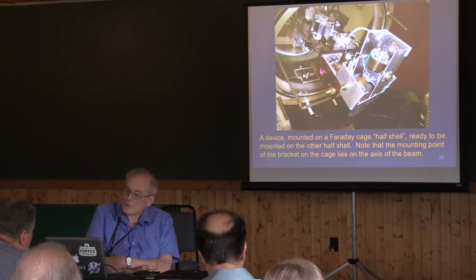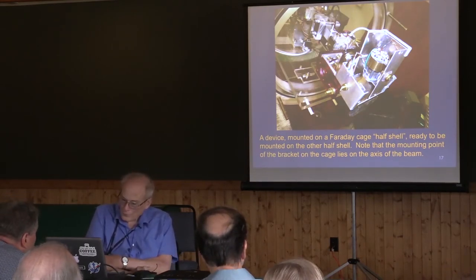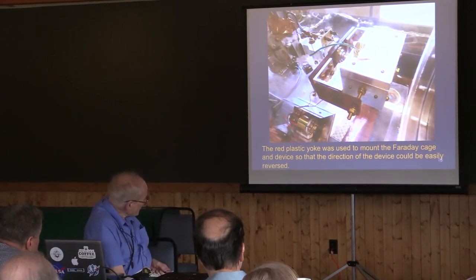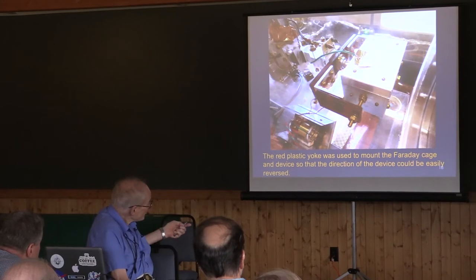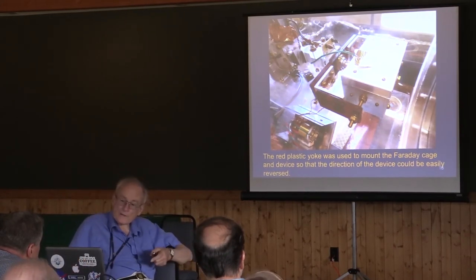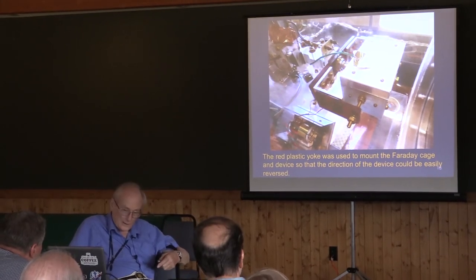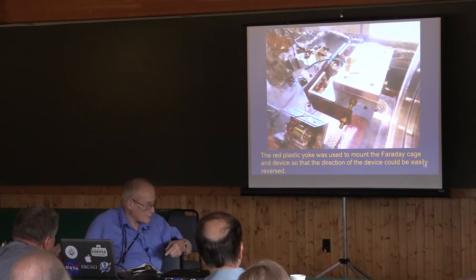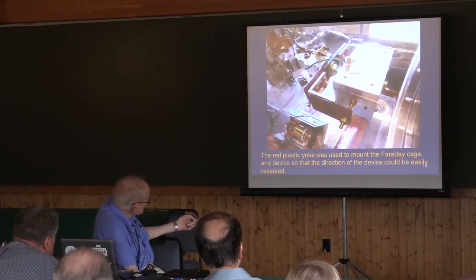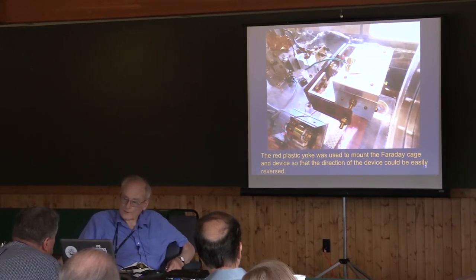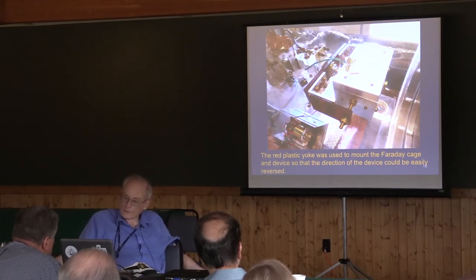This is a picture of the half shell with a device in it in the process of being put into the Faraday cage. This red plastic structure that goes around it is part of the vibration damping system. The aluminum and plastic parts are held together with 4-40 screws with little o-rings as a vibration damping arrangement. But the main reason for the plastic is this nut right here — all you have to do is loosen it and you can rotate the device on the end of the beam. One of the principal tests is reversing the direction of the device to see whether you get the same signal — if you do, you aren't looking at what you want; if the signal reverses, you are.